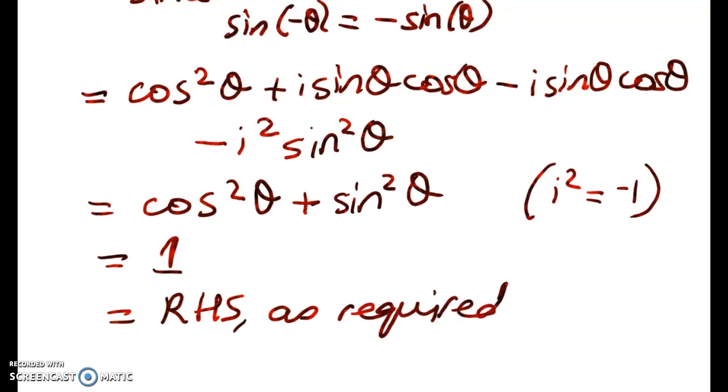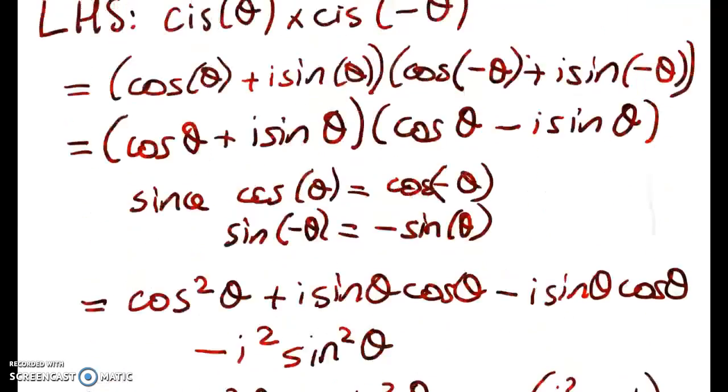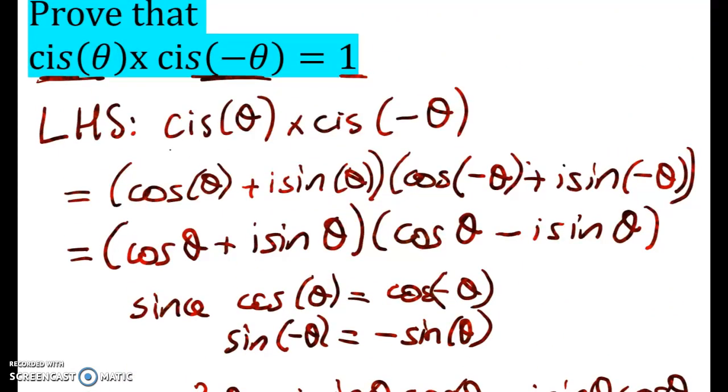So there you go. Again, if you're in the middle of a really difficult problem and you suddenly have cis theta times cis of negative theta, you don't have to do that proof all over again. You can just state that that is equal to one. So it comes in really handy. Thanks for watching. I'll do some more scholarship problems that use those two facts later on this week.